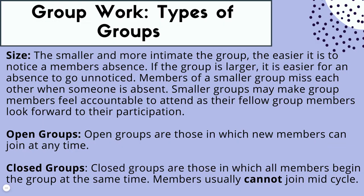Smaller groups are really good for accountability because members feel a strong connection. If a group member is absent, that will be more noticeable — and the next week when they come back, the group might say they really missed them and ask what happened in the past week. Small groups are really good for building that connection, and they really are a community and a cohesive unit that works together.